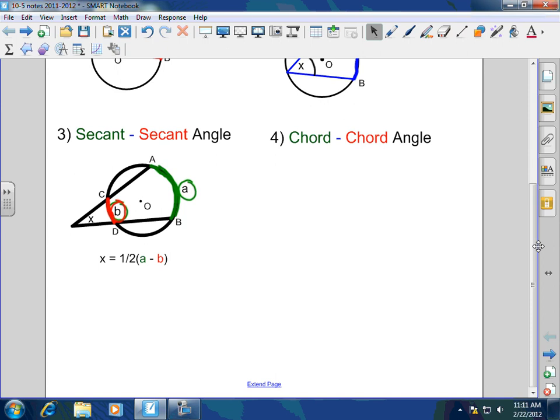All of those three we've seen before. Now, we've got a new one. Chord-chord. And chord-chord, it's A and B. So for chord-chord, even though the angles here are congruent, that does not mean that the angles are equal to the arc measures. Because these are not central angles. So in order to find X here, this chord-chord angle, it's equal to one-half of A plus B.